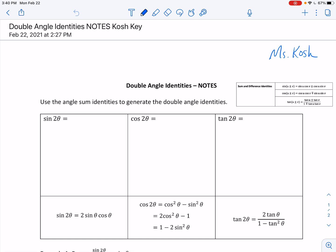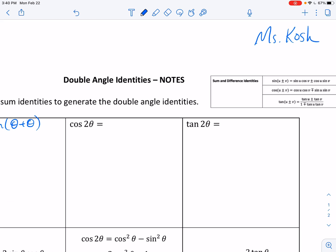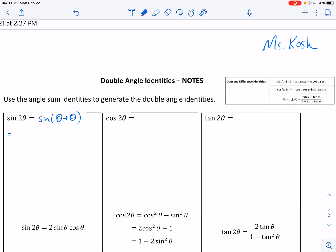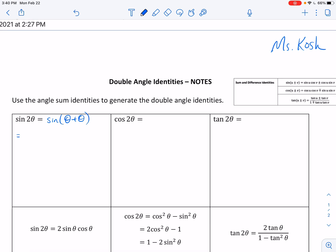And so what we know is that sine of 2 theta would be equal to sine of theta plus theta, because theta plus theta equals 2 theta. So what I can do is I can use the sine sum and difference identity, the sum identity, and expand this out. And so this becomes, this one I remember as sine, cosine, same S-I-G-N, cosine, sine.